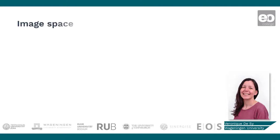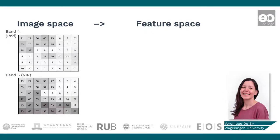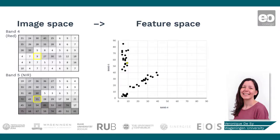Let's look at an example to illustrate these concepts further. On the left, the image space is shown consisting of two bands: band 4, recording surface reflectance in the red spectrum, and band 5 in the near-infrared spectrum. We can make a feature space plot by plotting the values of band 4 against band 5. Taking the yellow highlighted pixel — this pixel has a value of 9 in band 4 and a value of 55 in band 5. Indicated with the yellow dot and red arrow, you can see where this pixel is situated in the feature space. By doing this for all pixels in an image, we can build up the feature space.